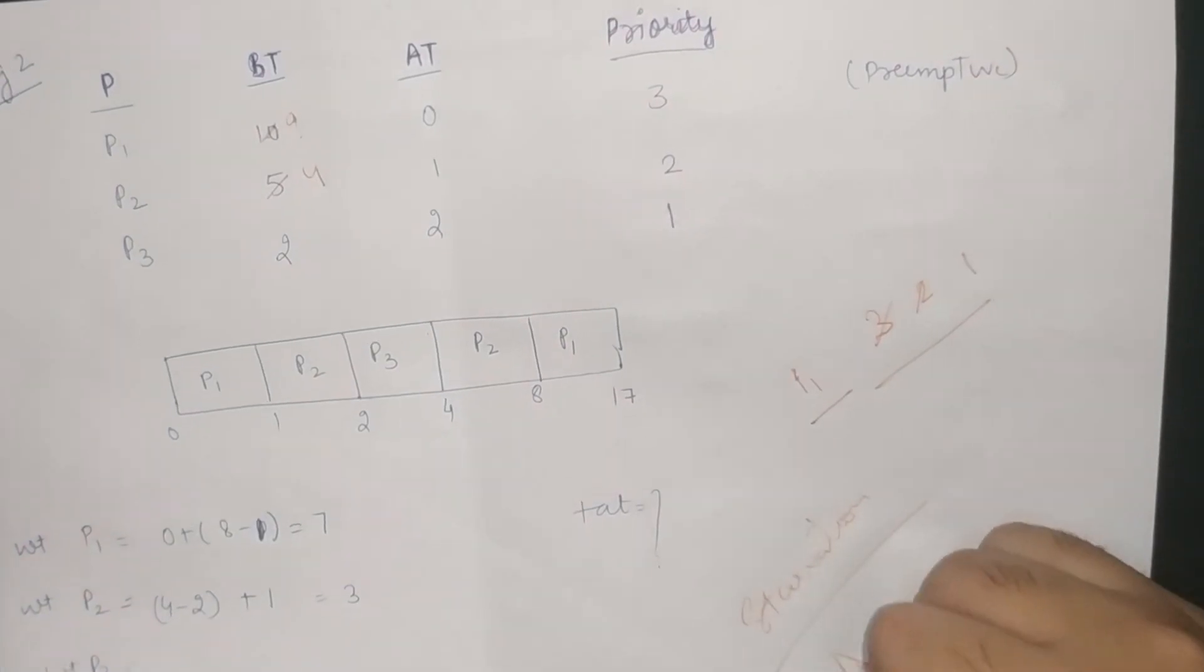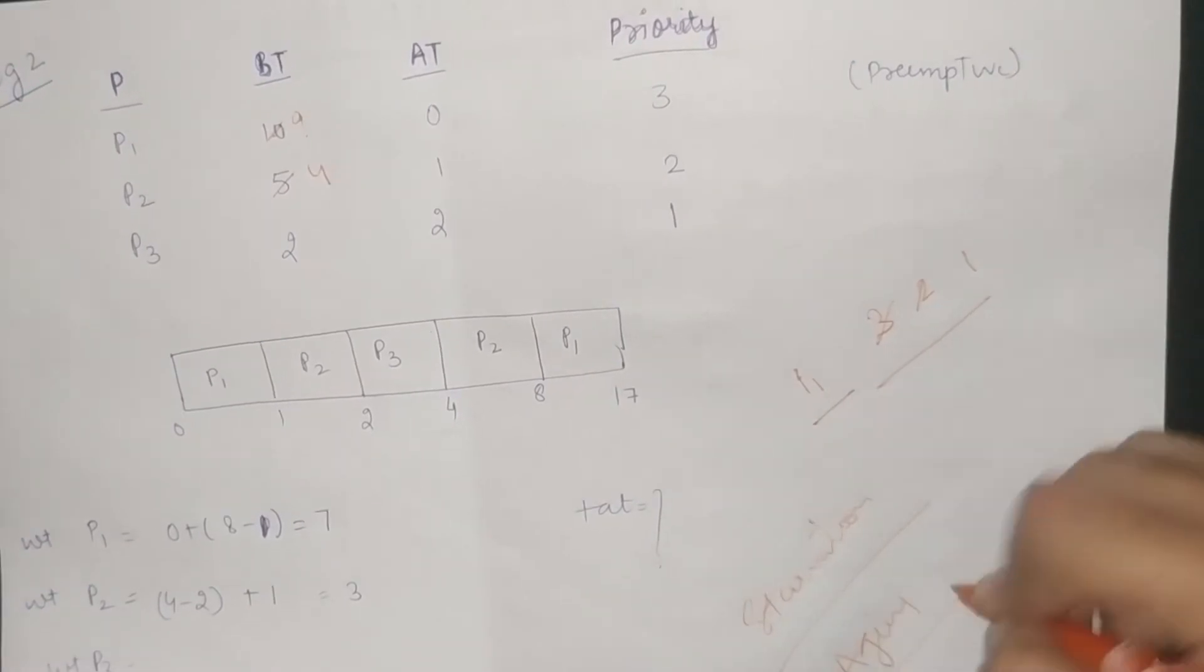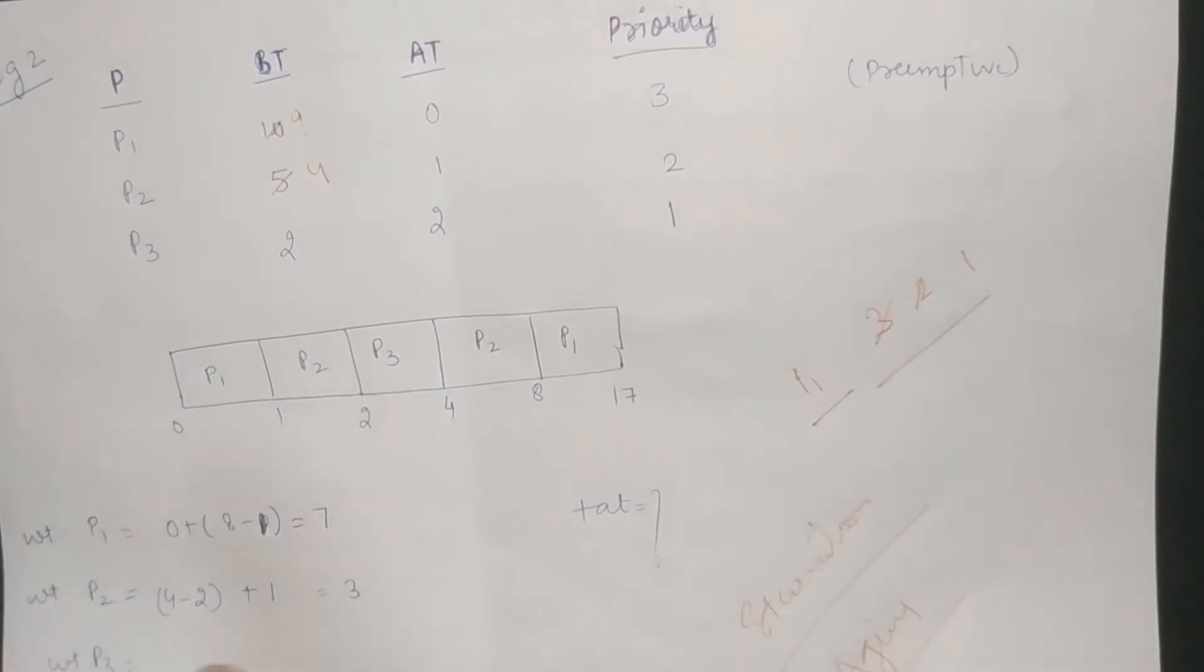The solution is aging. Now, what is aging? What happens is that we convert the least priority processes to high priority processes by increasing their priorities and by changing their priorities so that they can execute. This is only for a little time so that all processes can be executed before the task is over.